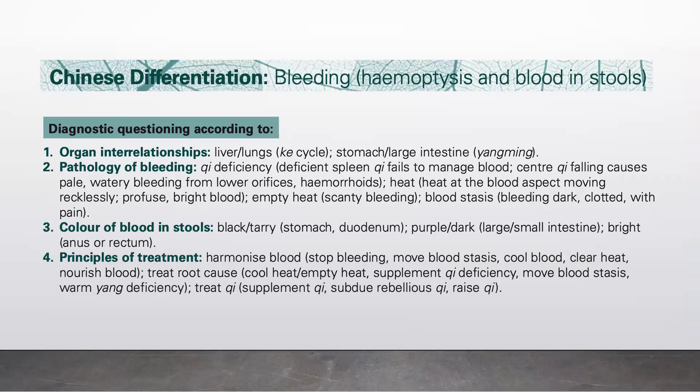Next we look at the color of blood in stools. If the stools are black and tarry, it could indicate problems from the stomach or duodenum. If the stools are purple and dark, the problem likely comes from the large or small intestines. If the stools are bright red, it indicates a problem from the anus or rectum.